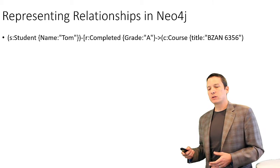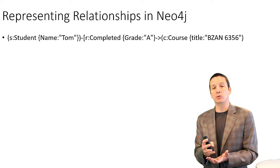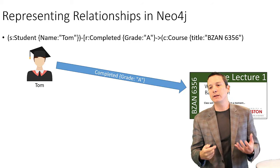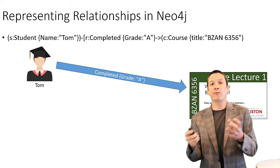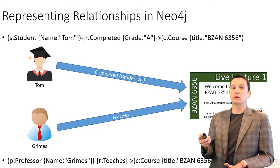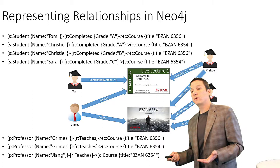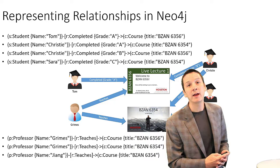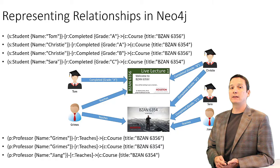For example, we could represent a Cypher query with a node that is a student with a name attribute of Tom, who is in a relationship with course BZAN6356, where Tom has completed that course with a property of grade and a value of A for that relationship. We might have another node representing the professor of the course, who has a relationship indicating they taught the course. We can have multiple students, courses, and professors — anything we could draw on a whiteboard, we can model in Neo4j and query it using the Cypher language.